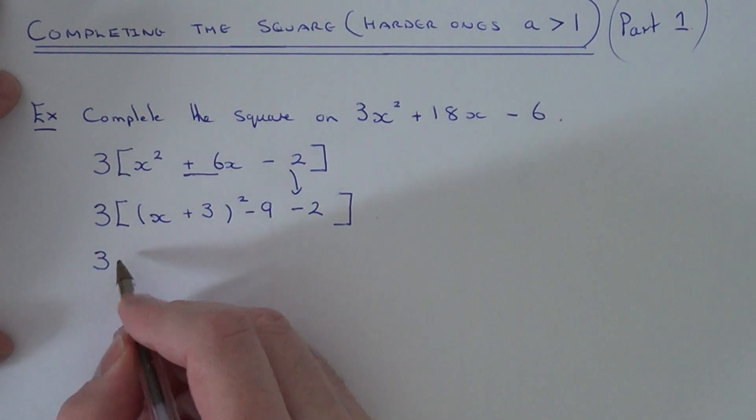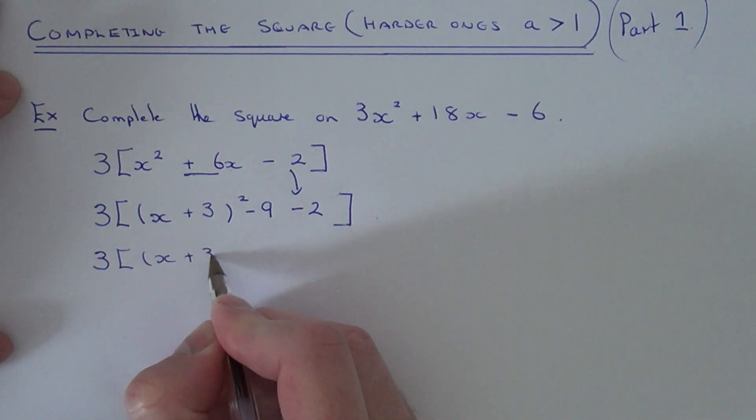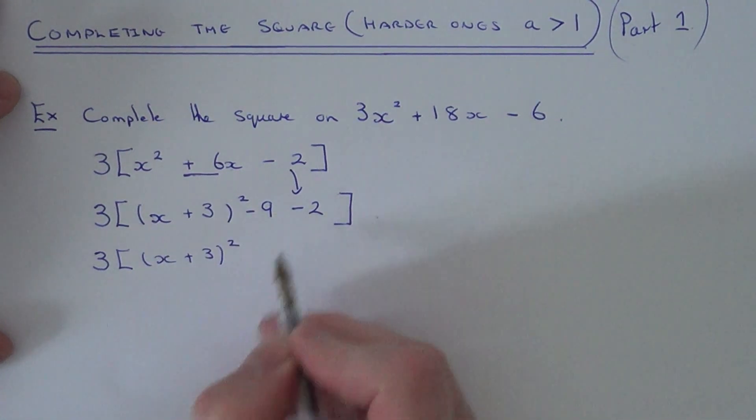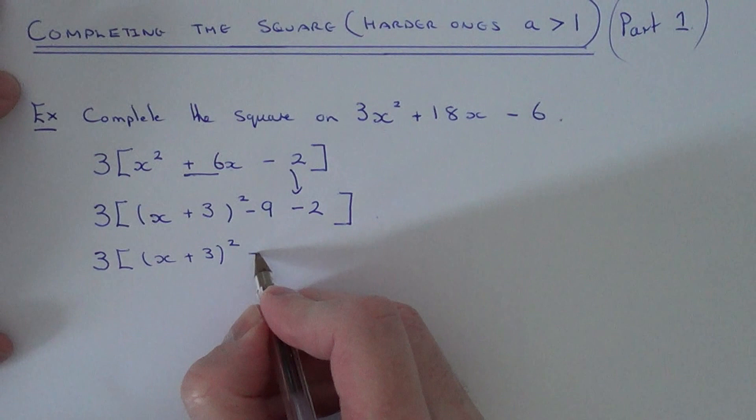So we can now simplify the end bit, so minus 9 take away 2 is minus 11.